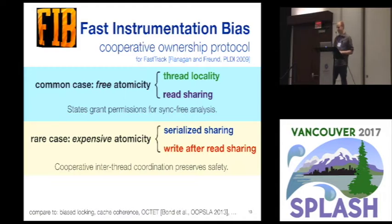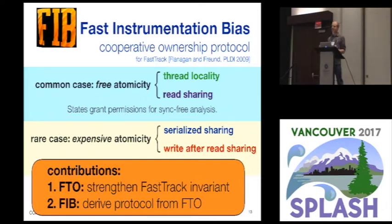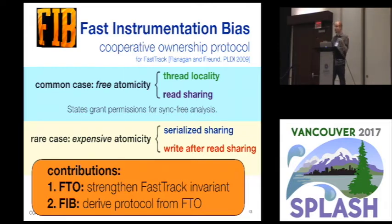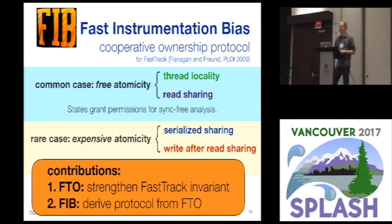This is the basic idea of FIB, and we're going to implement it in two parts. First, we're going to make a small revision to FastTrack to strengthen a key invariant in the access history such that a notion of ownership just pops straight out of the access history — it's already there, we just need to see it. On top of that, we'll build a FIB protocol that uses a state system and some communication to implement a safe version of this ownership protocol.